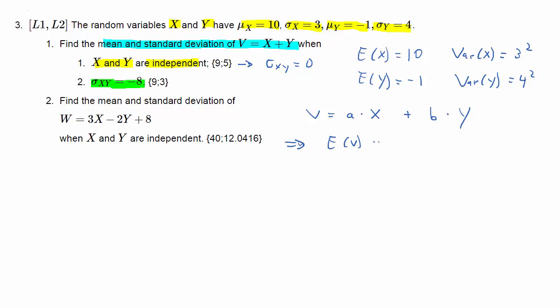More generically, a combination of two random variables has two weights, a and b, to the X and Y. If we want to calculate the expected value of V, we have to weight the expected values. If we want to calculate the variance of V, we will use this formula: a² Var(X) + b² Var(Y) + 2ab Cov(X,Y). These will be the formulas we will be using to solve this question.